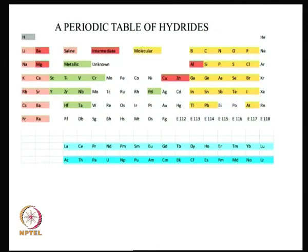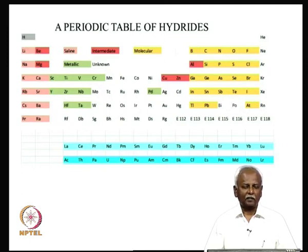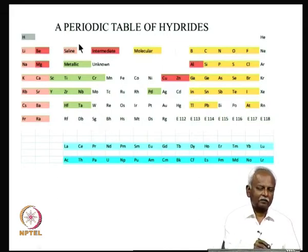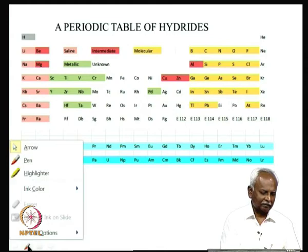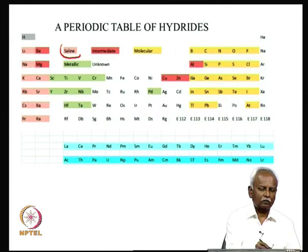If you look at the periodic table and look at all the metal hydride complexes, you will notice there is a distinct gradation in the properties of metal hydrides formed. There are some metal hydrides formed by alkali and alkaline earth metals, which are on the left side of the periodic table. These are marked in pink, and they are marked as saline — salt-like metal hydrides.